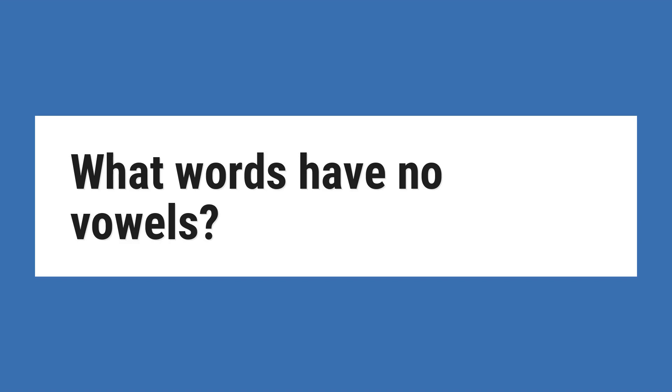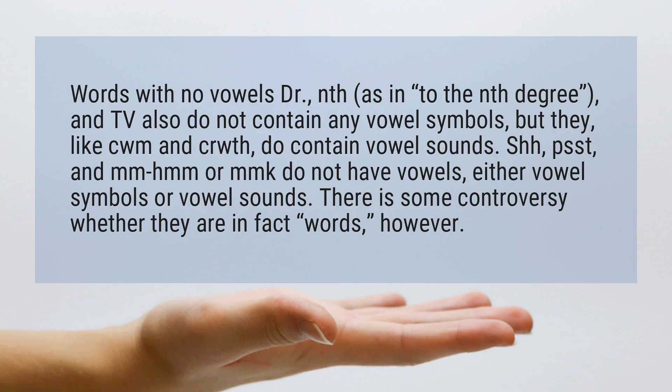What words have no vowels? Words with no vowels: nth, as in 'to the nth degree,' and tv also do not contain any vowel symbols, but they, like cwm and krut, do contain vowel sounds.